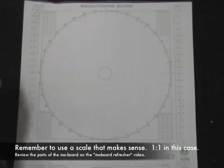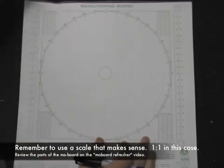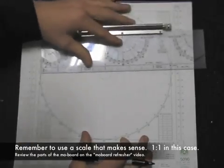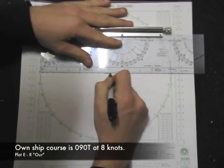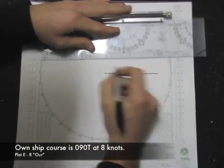Hopefully you know the parts of the mow board. If you need to review the other video that we have, please do that. Always pick the right scale. We're using 1 to 1 in this case. We're plotting our own ship's course at 090 at 8 knots, labeling it E to R.